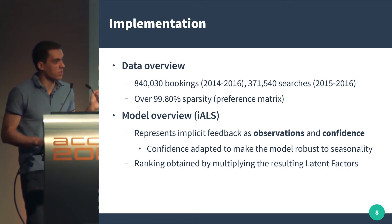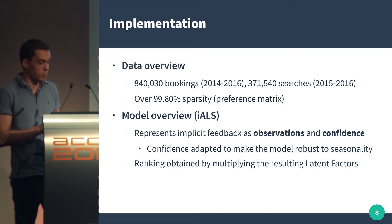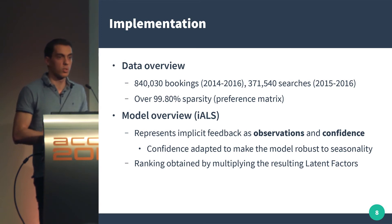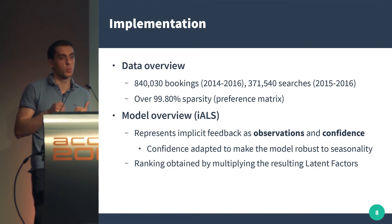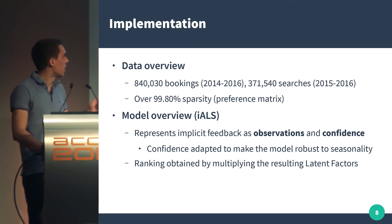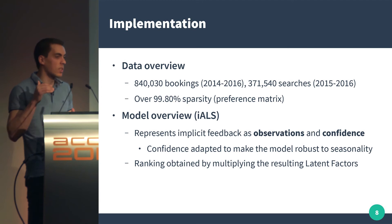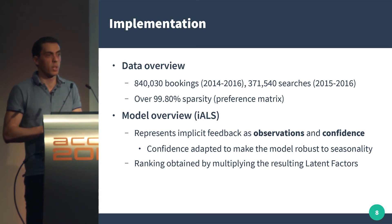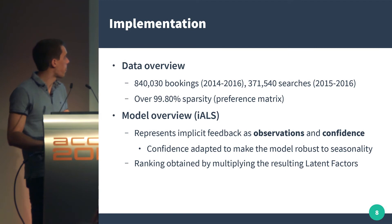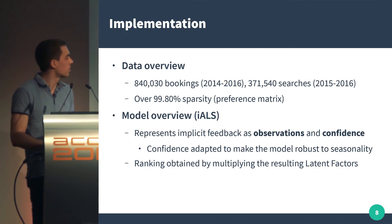A key aspect of the IALS model is that it breaks down the feedback between observations and confidence. Observations represent whether you had a booking or not — a zero or one. Confidence represents how confident we are about that one. The model works by leveraging the number of bookings to determine how confident we are that a person likes something. This was really helpful for adapting seasonality — a booking that happened a year ago doesn't have the same weight as one that happened a week ago. By managing those weightings, we can embed seasonality into the model. And obtaining the ranking is extremely light: once you have the latent factors, you just multiply some small vectors to get the ranking.